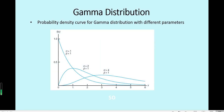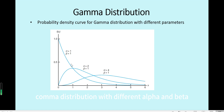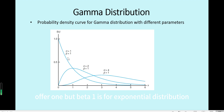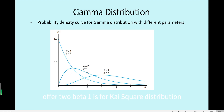Looking at this figure, there are several curves for the gamma distribution with different alpha and beta. For example, alpha=1, beta=1 is for the exponential distribution. And alpha=2, beta=1 is for the chi-square distribution, and so on.